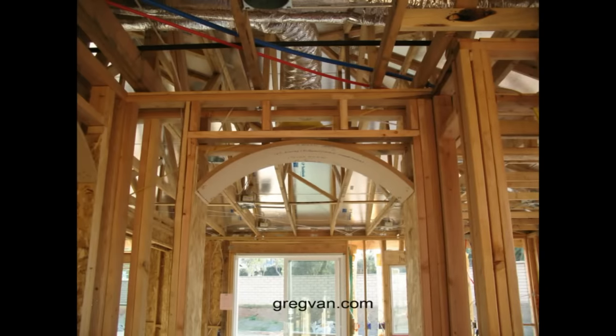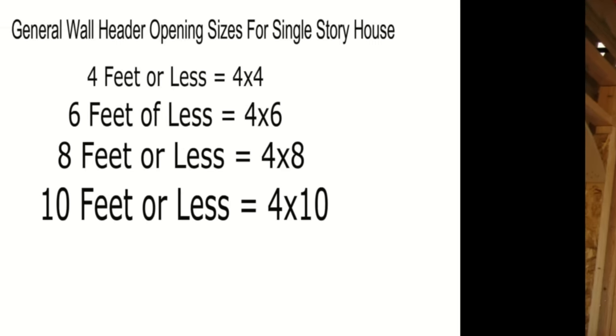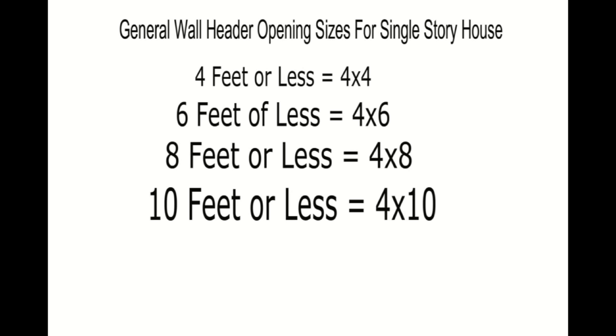Here's an example of a non-bearing wall where the roof trusses are not sitting on top — it has just a 2x4 in there. This is a way to save money when building houses. Even if you're remodeling and working with non-bearing walls, it still wouldn't be a bad idea to stick with this chart, because you're not building a hundred homes at a time — you're remodeling a single house.